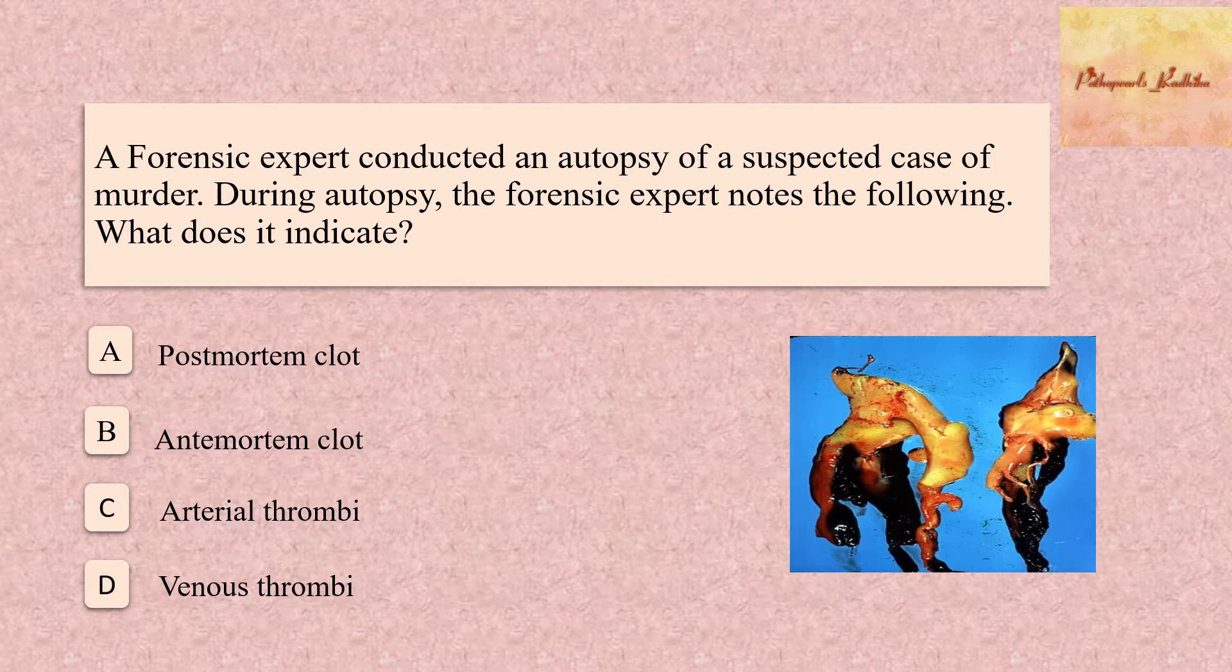Now let's go to the question. A forensic expert conducted an autopsy of a suspected case of murder. And during autopsy, the forensic expert notes the following. What does it indicate? Post-mortem clot, antemortem clot, arterial thrombi, venous thrombi.